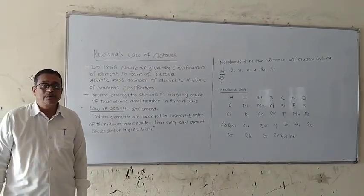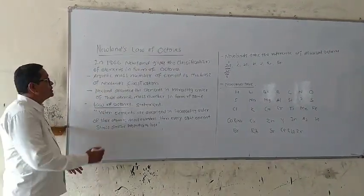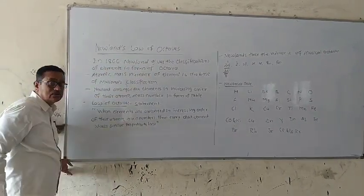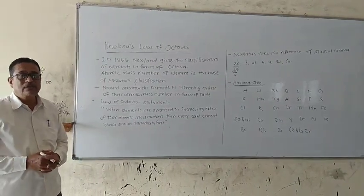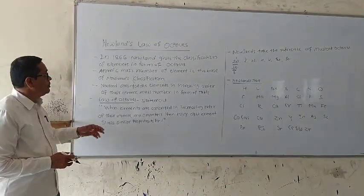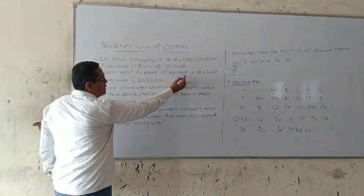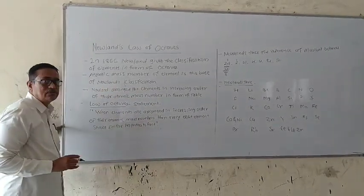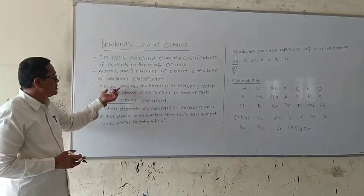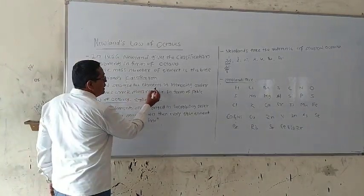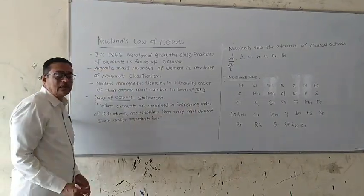The second classification of elements is Newland's Law of Octaves, given by Newlands. Atomic mass number of an element is the base of Newland's classification. Newland found that all the properties of elements are dependent upon its atomic mass number, and hence Newland arranged the elements in increasing order of their atomic mass number in the form of a table — called Newland's table.